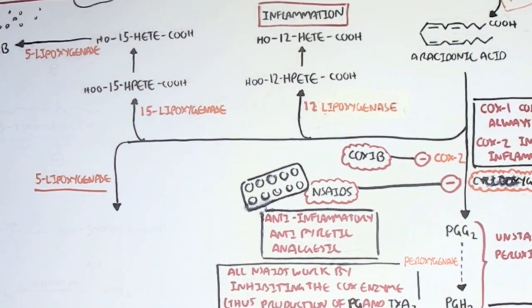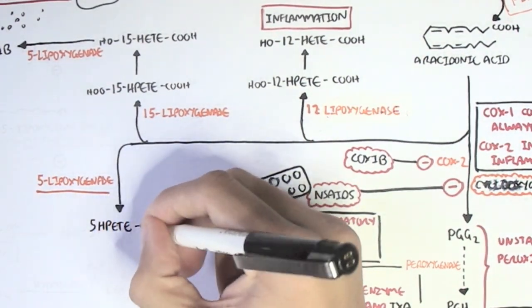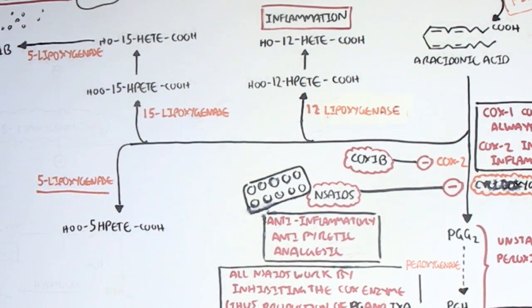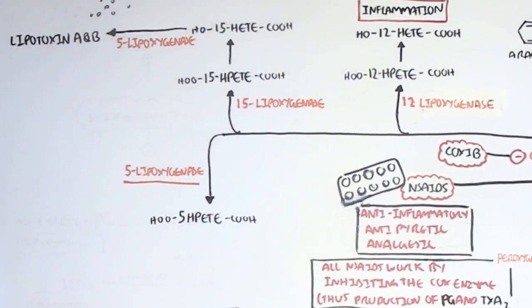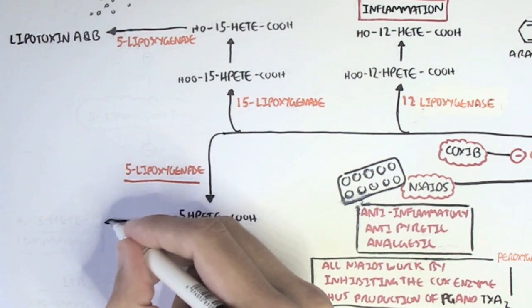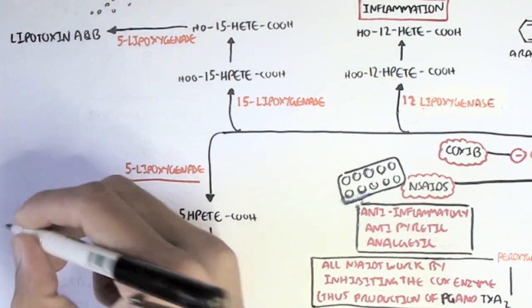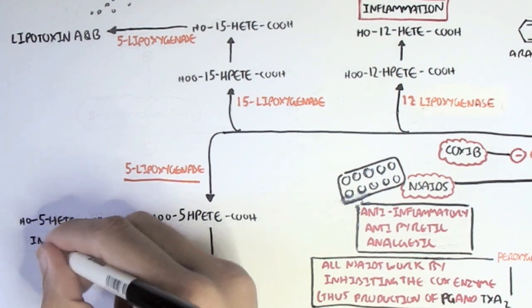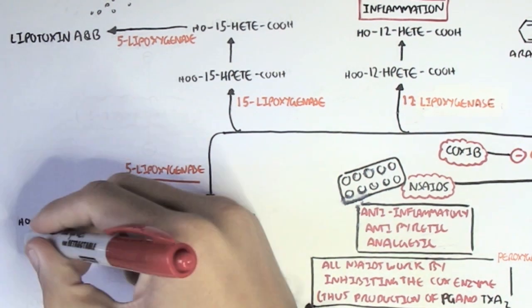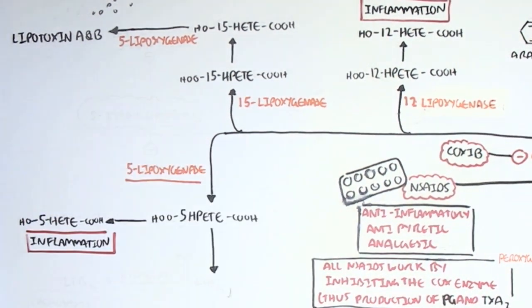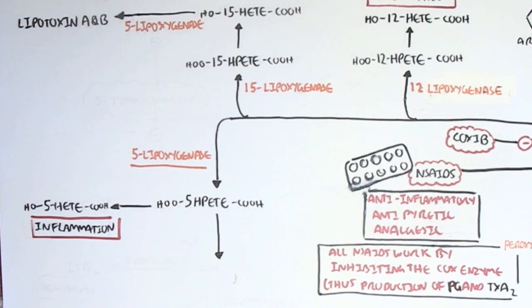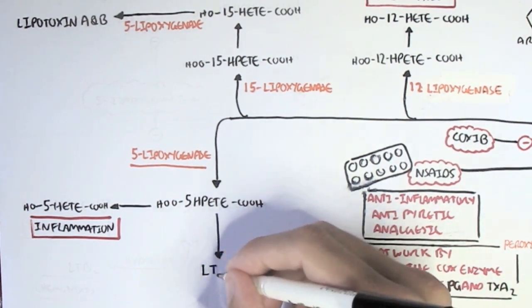So continuing on, arachidonic acid can also be converted straight away to 5-HPETE by the enzyme 5-lipoxygenase. 5-HPETE has two pathways. It can convert to 5-HETE and thus can have inflammatory effects.